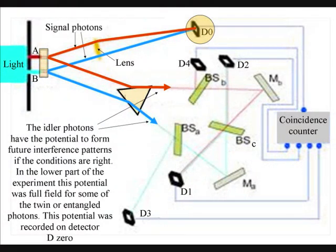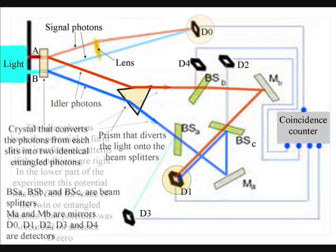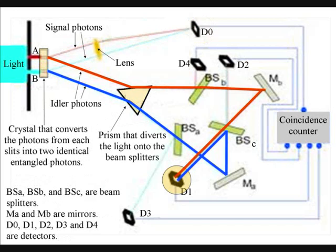All of those photons that were recorded on detector D0 had the potential to form an interference pattern if the conditions had been right. In the lower part of the experiment this potential was fulfilled for some of the twin or entangled photons.